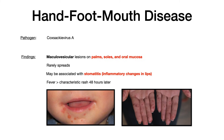If you see pictures or read the vignette describing lesions on the hand, foot, and mouth, you already know it's hand, foot, and mouth disease. This might be associated with stomatitis, which is inflammatory changes in the lips. The way this presents is the patient will have a fever, and then approximately 48 hours later, they'll develop the characteristic maculovesicular rash on their palms, soles, and oral mucosa. No mnemonic needed here since the name tells you exactly where the lesions are — just memorize Coxsackievirus A as the cause.